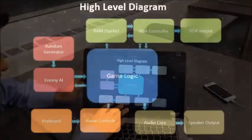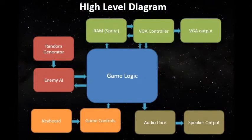Let us go into the technical details of the project. This is the high level diagram of the game. The central part is the game logic and all the other modules are coordinated within the game logic. In the top part we have a VGA controller and we use the sprite BRAM for displaying various images. On the left hand side we have the random number generator which is used for random generation of enemies. We use the keyboard for the entire game control and we also use the audio core for playing sound.